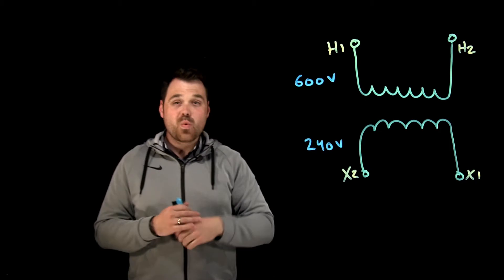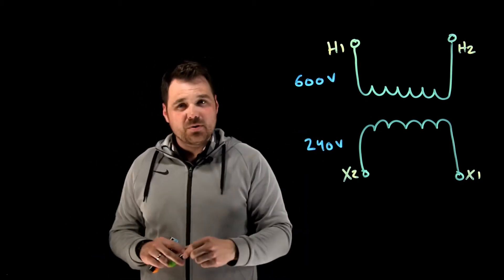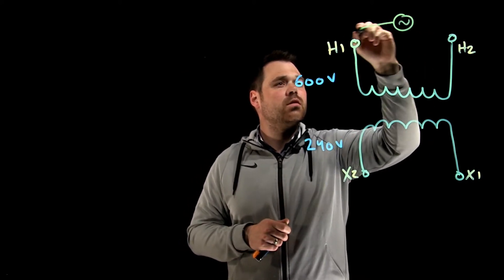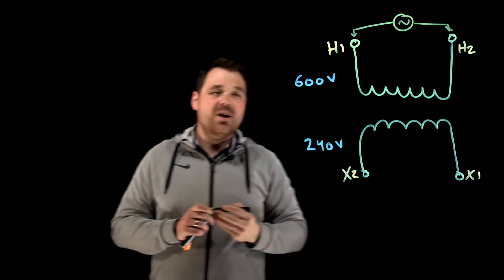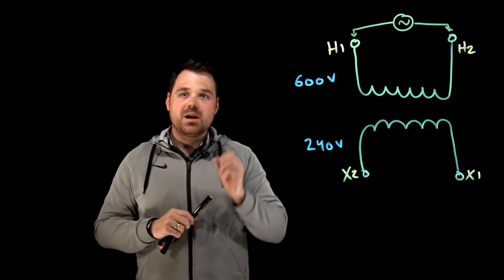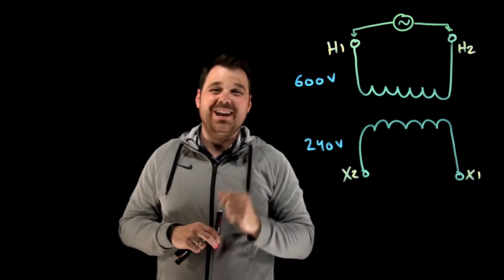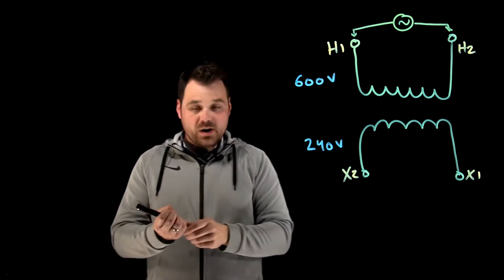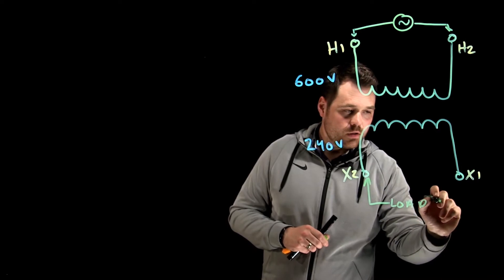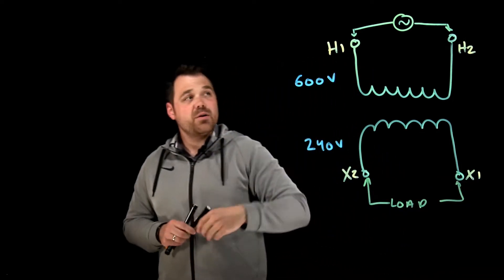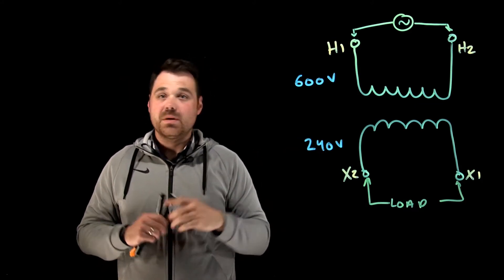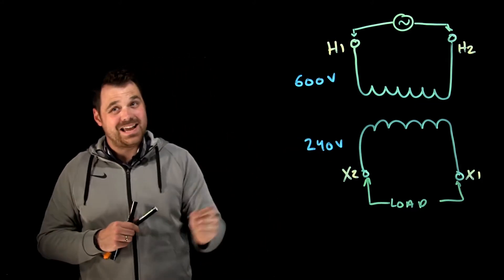Wherever I apply the source, that becomes what we call the primary. The primary winding is the one where you connect the source. The secondary winding is the one where you connect the load. For our example here, we're applying 600 volts to the primary. My primary voltage is 600 volts. My secondary voltage is 240 volts. This is a step down transformer.